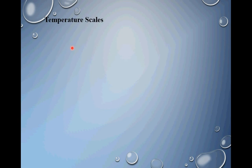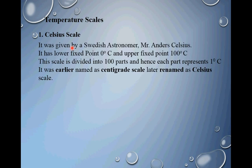Once you have a thermometer, there should be a scale. There are four scales. The first scale is the Celsius scale, given by Swedish astronomer Mr. Anders Celsius. There are two points used to define this scale: the lower fixed point, 0 degree Celsius, and the upper fixed point, 100 degree Celsius. These two points are defined using water as a substance — 0 degree Celsius corresponds to the ice point of water, and 100 degree Celsius corresponds to the steam point of water. This scale from 0 to 100 degree Celsius is divided into 100 parts, so each part represents 1 degree Celsius. It should also be noted that the earlier name of this scale was centigrade scale; later it was renamed Celsius scale.